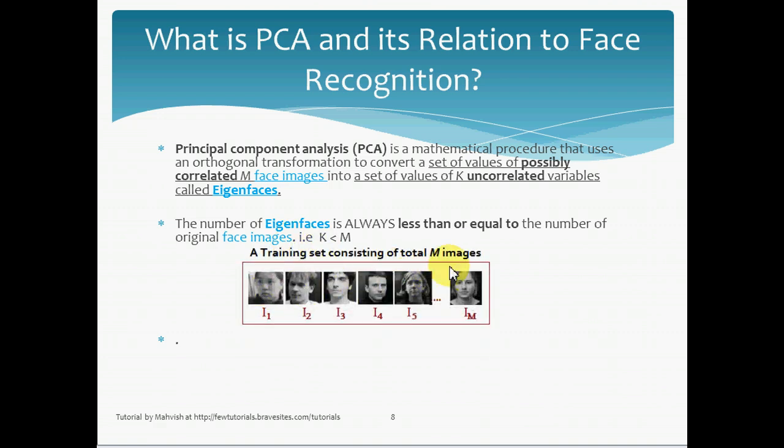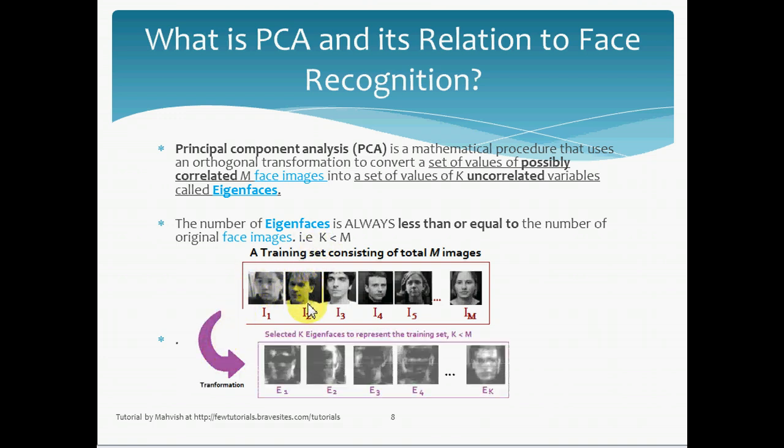Once again, we have that training set consisting of M images. When PCA is applied, transformation results in a set of eigenvectors, where K, that is, total number of eigenvectors is always less than the total number of images in our training set.